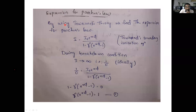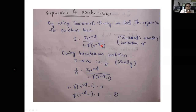Now let's find the expressions for PD minimum and VB minimum. By using Townsend's criterion, we are finding PD minimum and VB minimum. We know from Townsend's theory, we already derived the expression: I equals I-naught times e-power-alpha-d divided by one minus gamma times e-power-alpha-d minus one. According to Townsend's secondary ionization theory, we get this expression.